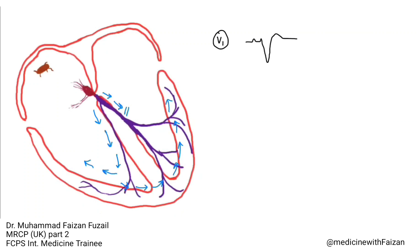In V1 or V2, it will look like this, and in V5 or V6, it will look like this. QRS duration more than 120 milliseconds or 0.12 seconds is what constitutes bundle branch block. You can find the link to my lecture on left bundle branch block in the description. We also discussed that in left bundle branch block, there is electrical disturbance with repolarization too. Since repolarization is represented by the T wave on ECG, the T wave will look like this in V1 or V2, and like this in V5 or V6.